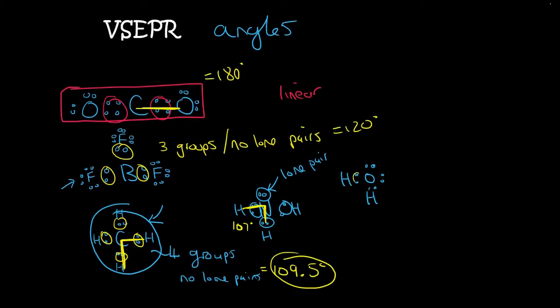Then in the next one, if we have four groups, but now we have two lone pairs, then you minus another 2.5, and so we end up with 107 minus 2.5, which is 104.5 degrees.